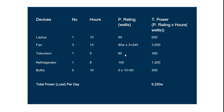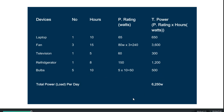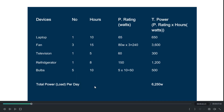We have a television rated 60 watts which we want to run for five hours — 60 by 5 gives 300 watts. A refrigerator rated 150 watts run for eight hours gives 1,200 watts. Then we have bulbs, each rated 10 watts. Taking 10 watts multiplied by 5 bulbs gives 50 watts, and multiplied by the number of hours gives 500 watts. The total load on our system per day is 6,250 watts.